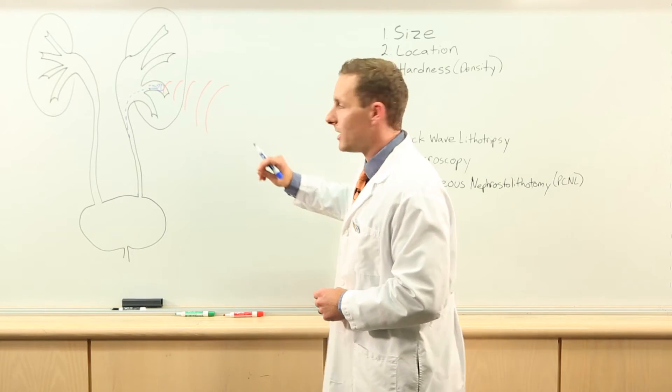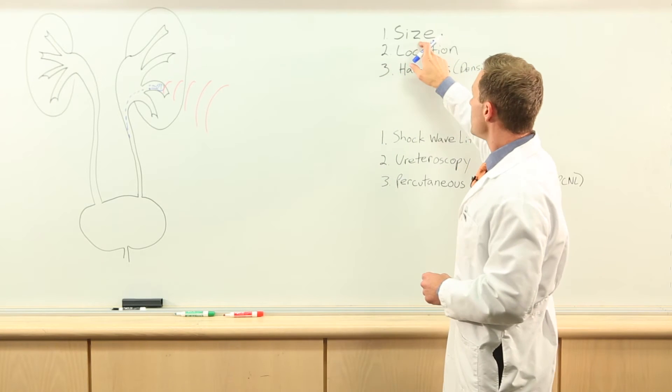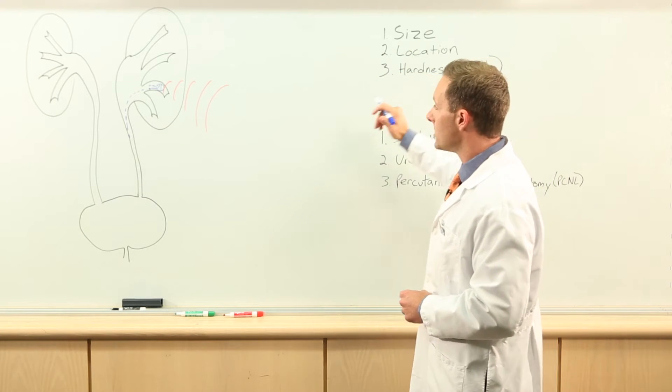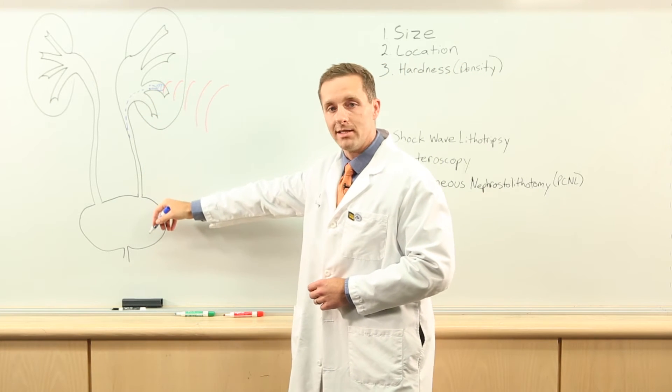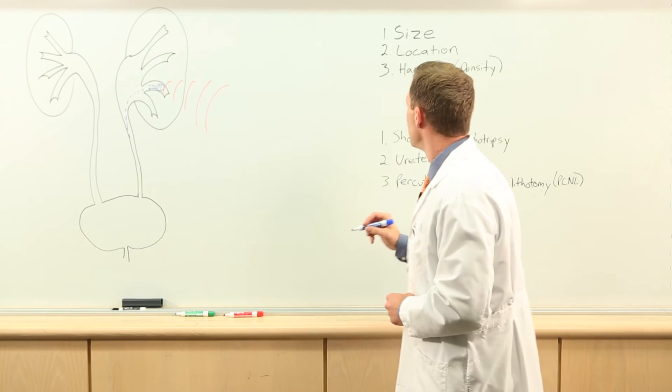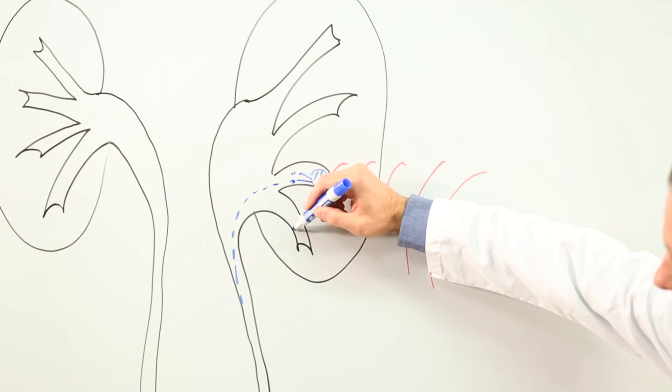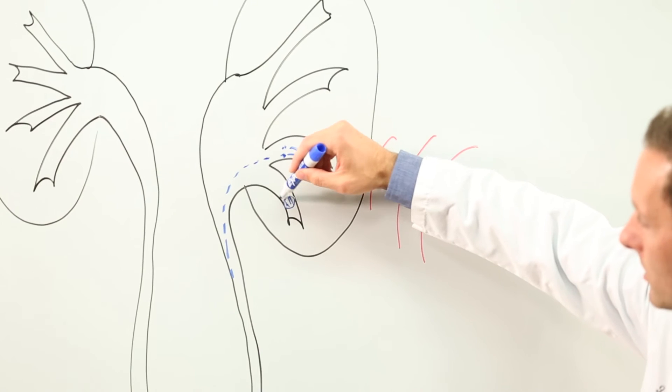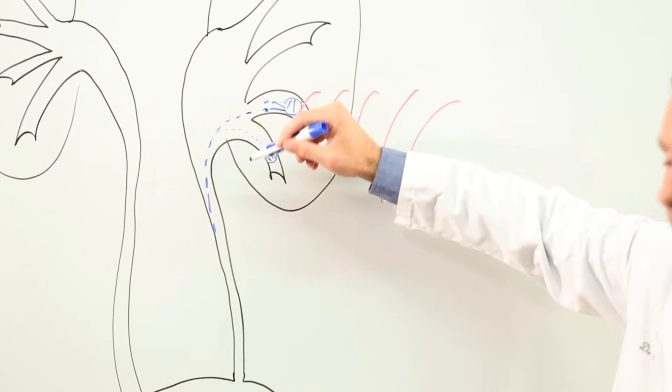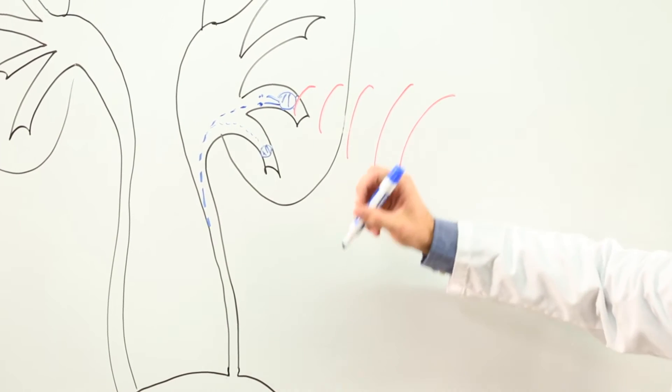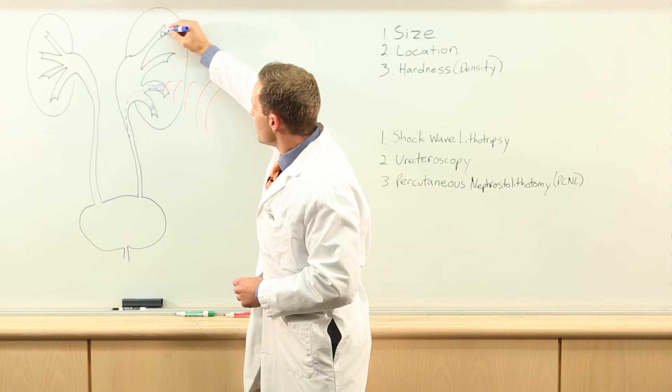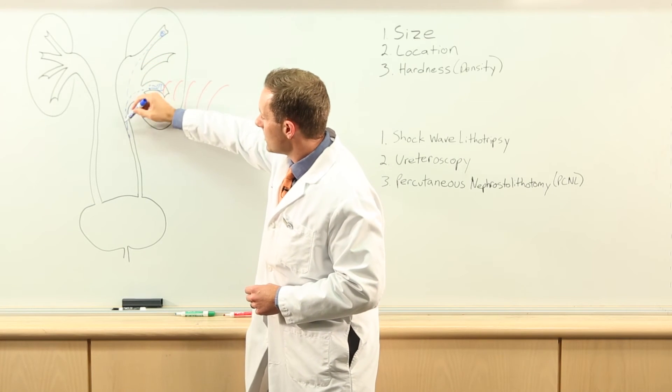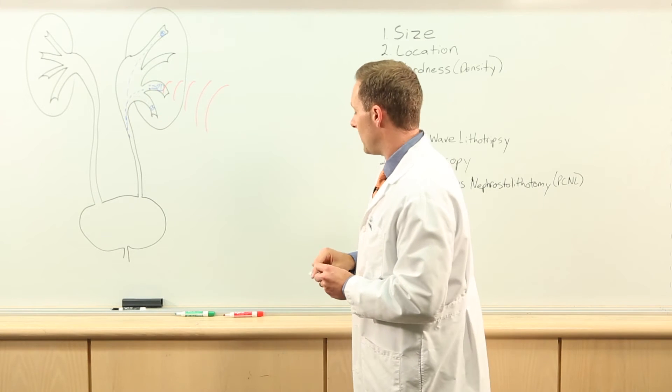Shock wave lithotripsy works best for smaller stones and also stones that are softer because these pieces are more likely to pass down the ureter and out the bladder. It does not work well for stones that are in the lower part of the kidney because these stones have to come up over a hill to pass down the ureter. It works much better for stones in the top part of the kidney because those pieces can pass down and out by themselves.